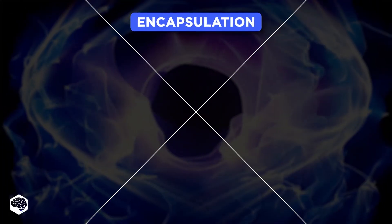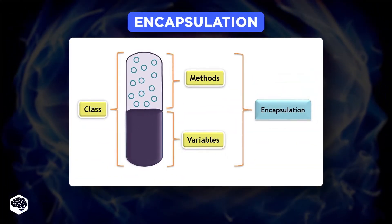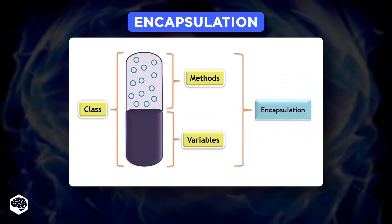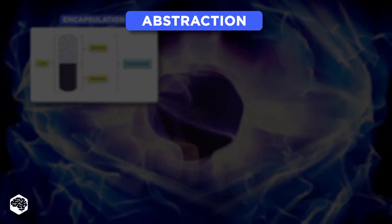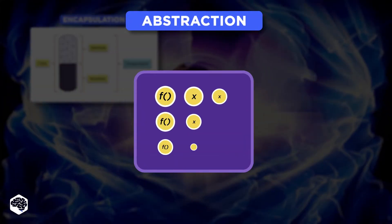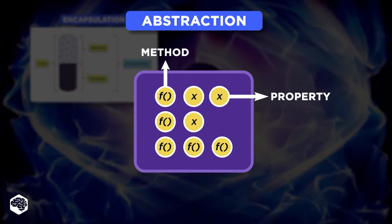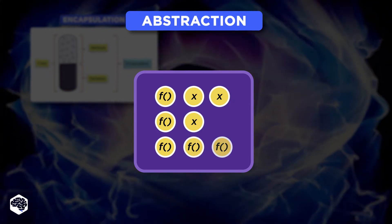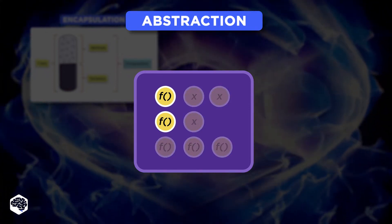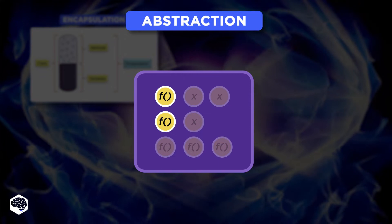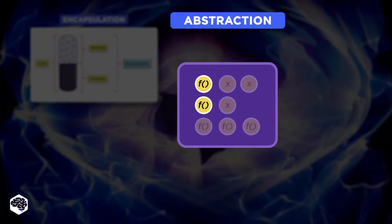Object-oriented languages are based on four principles. The first is encapsulation, which is the concept of data binding to functions that work to keep that data secure. The second is abstraction, which is an extension of encapsulation, and its purpose is to reveal only those information objects necessary to interact with it and hide everything else.